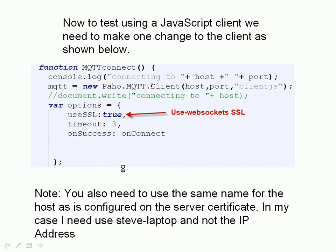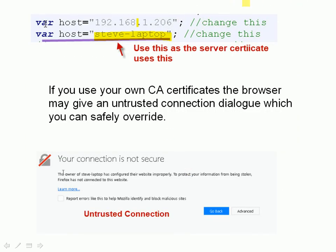We can also test using the JavaScript client. We need to make just one change to the client — add this into the MQTT Connect function. The complete code for this client is available for download on the site, and I'll put the link below the video. All you need to do is add that to the connection function. You may also need to change the server name for the host depending on how it's configured on the server certificate. In my case, I used the name Steve Laptop and not the IP address, so I had to modify the script to use Steve Laptop rather than the actual IP address.